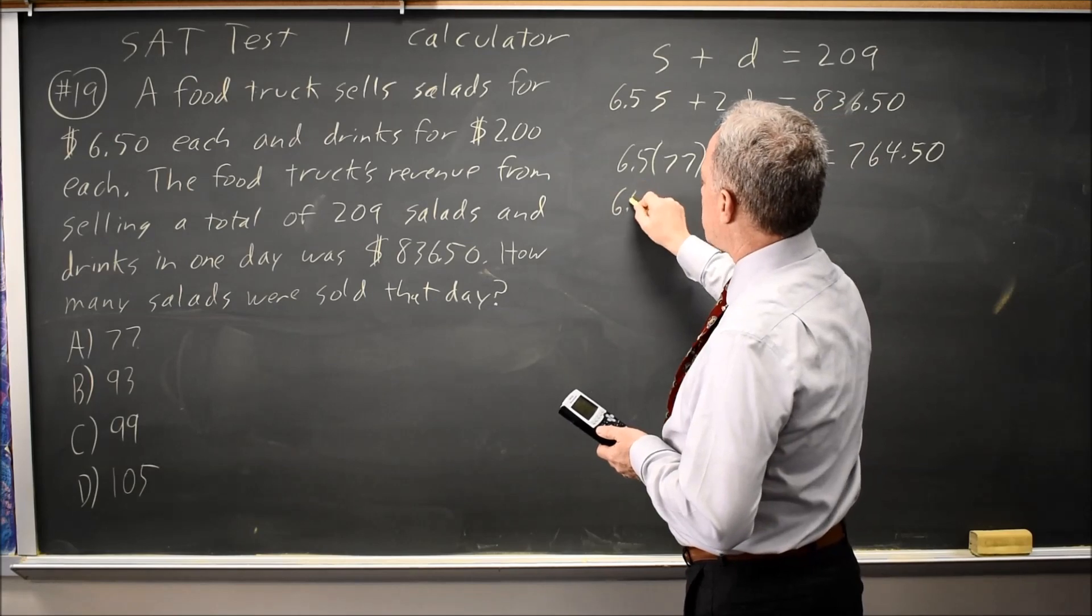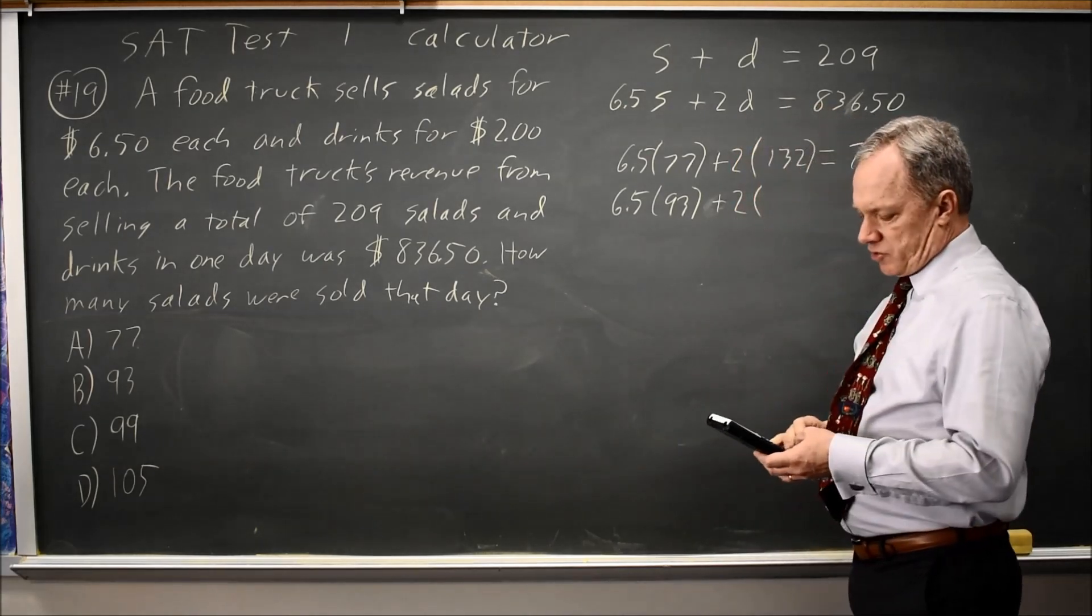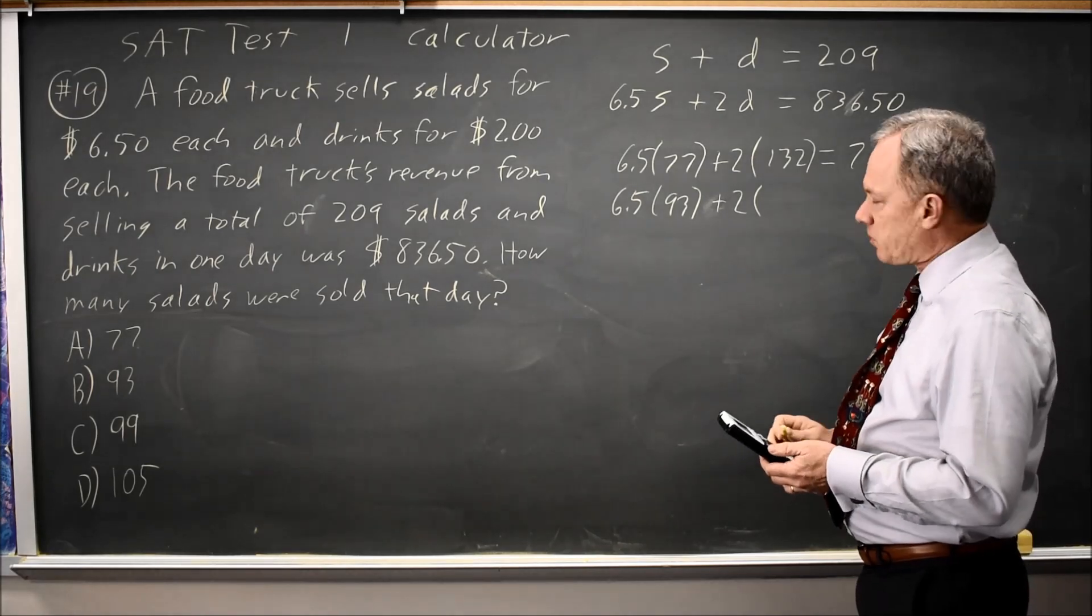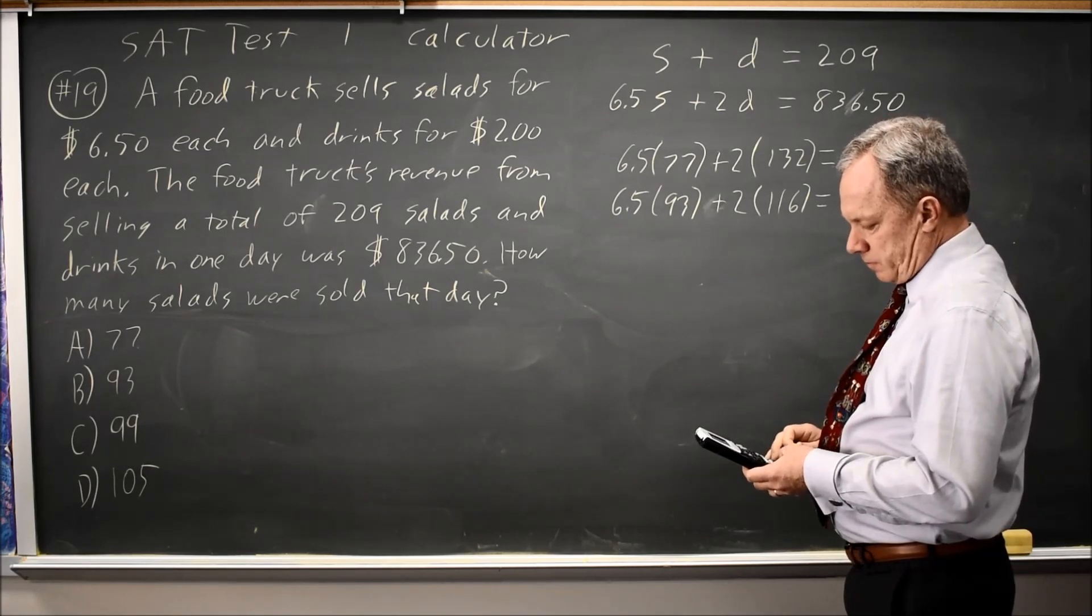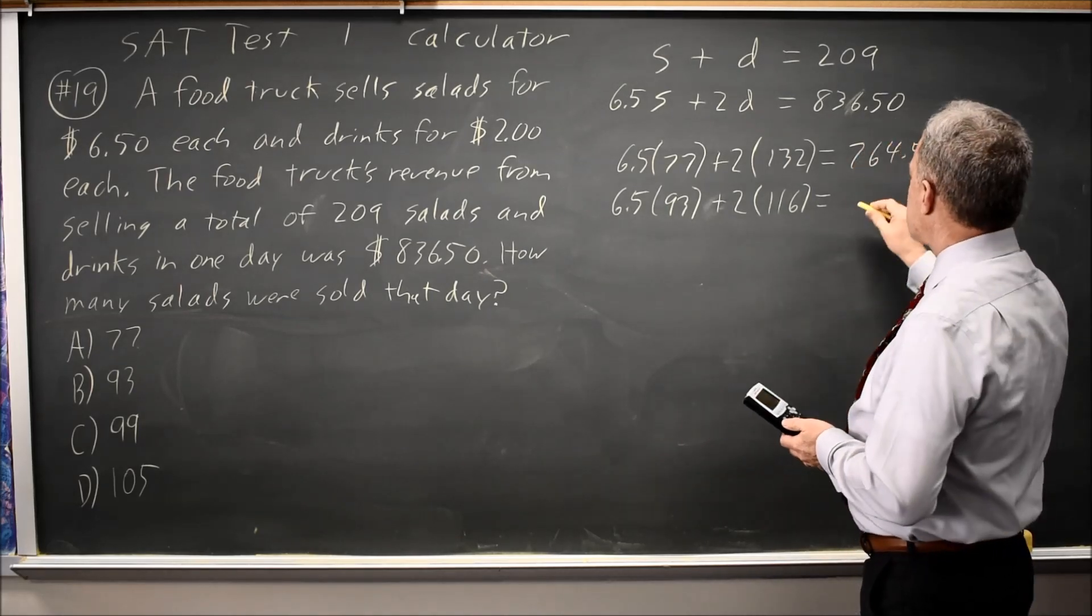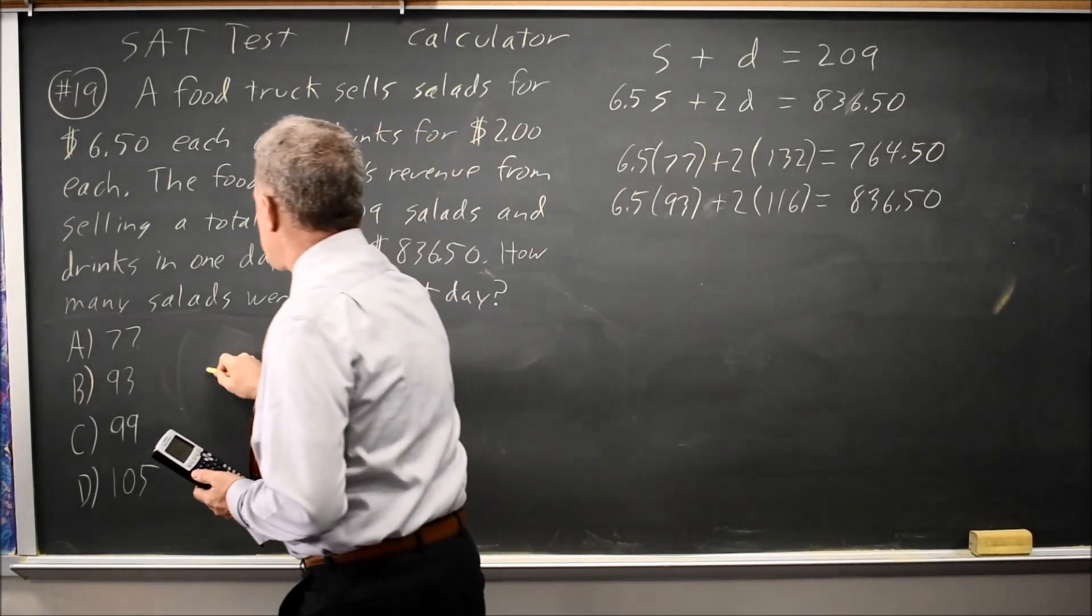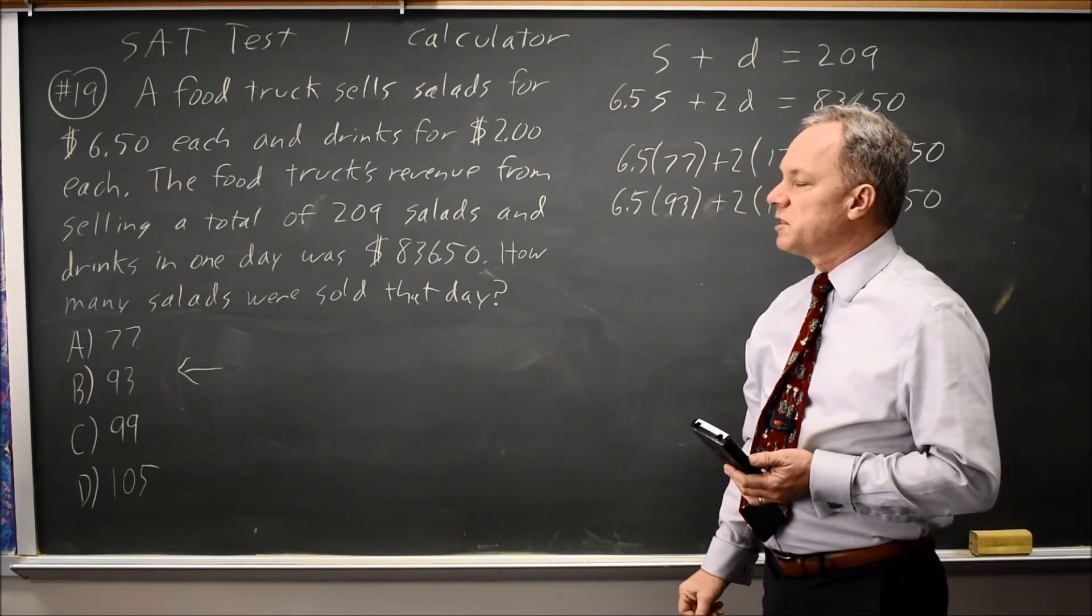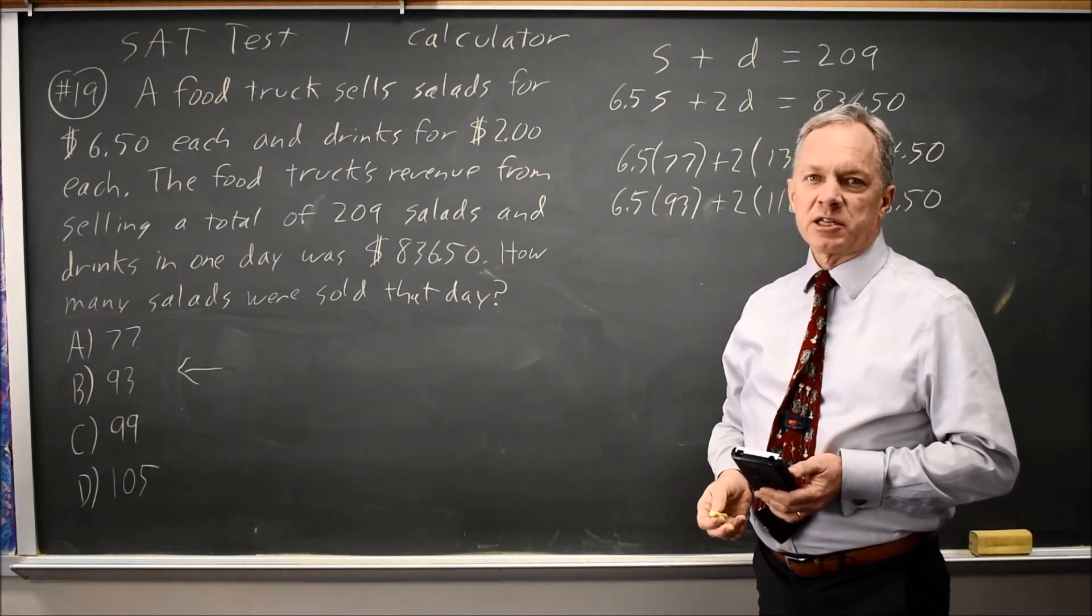Let's try the next choice. 6.5 times 93 salads plus twice 116 drinks at $2 each. So that gives me $836.50. 93 salads works. So that's the correct answer just by plugging in your answer choices. We don't need the systems of equations skills, we just need the test-taking skills. They're asking you to find the right answer. The right answer is one of those four, so I try them until one of them works.